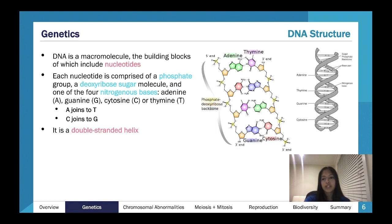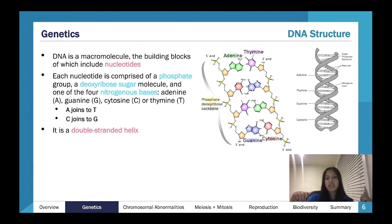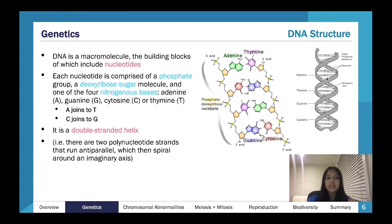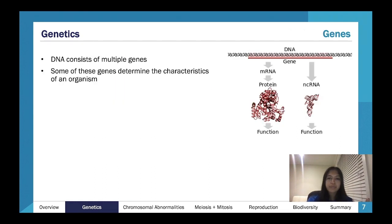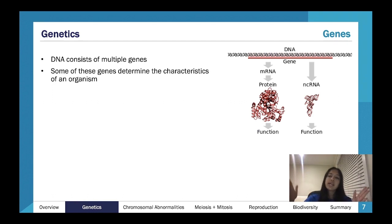DNA is a double-stranded helix — two strands that run anti-parallel, with the helix part being like a corkscrew coiled around. A nice long string of these nucleotides is what makes up a gene.